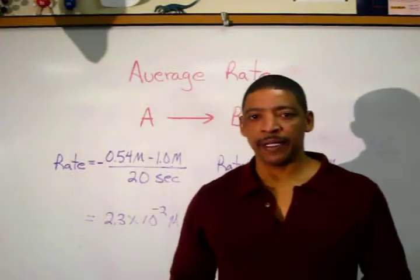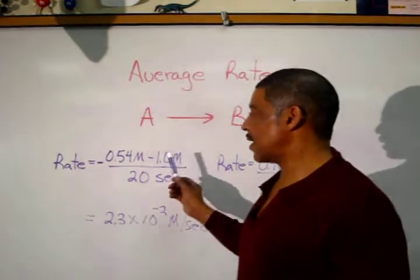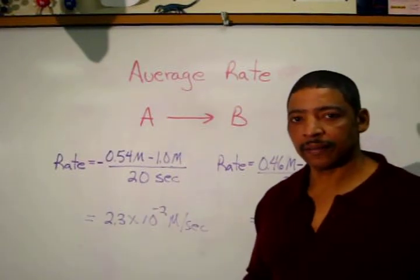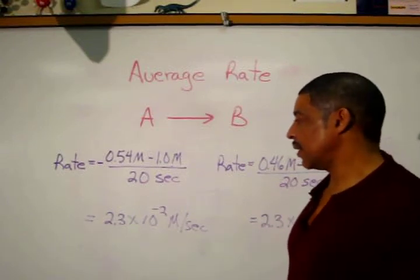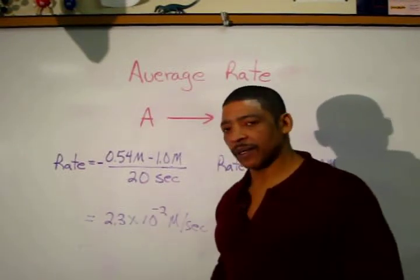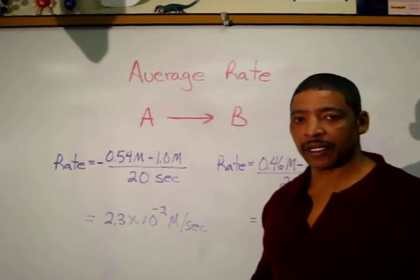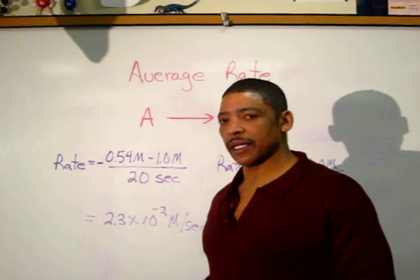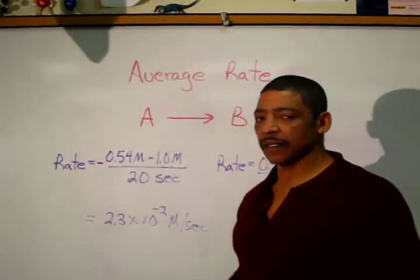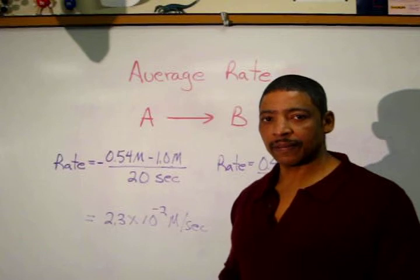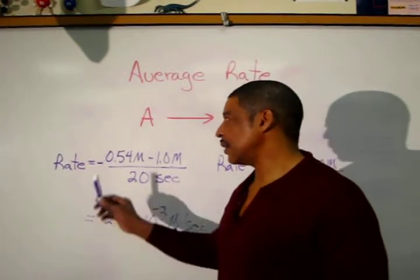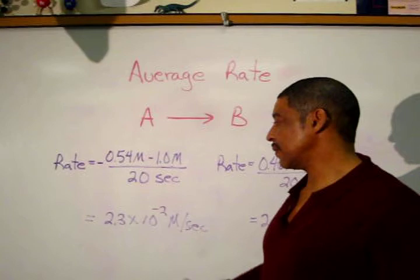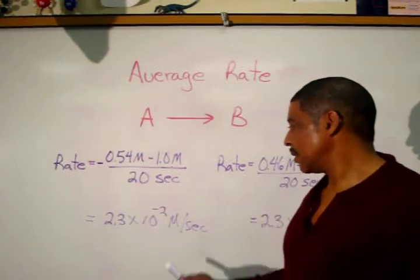The average rate may now be calculated by subtracting the initial concentration of A from the final concentration of A and dividing by 20 seconds. This will give negative 2.3 × 10⁻² molar per second. However, in the initial formula there is a negative sign, so taking the negative of a negative will give a positive answer. The final rate of this reaction in terms of reactant A will be positive 2.3 × 10⁻² molar per second.